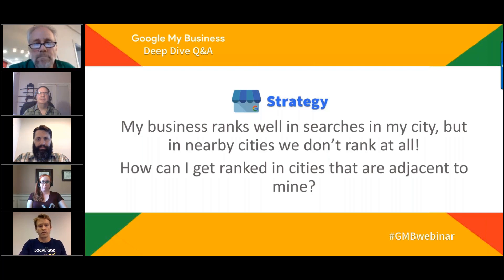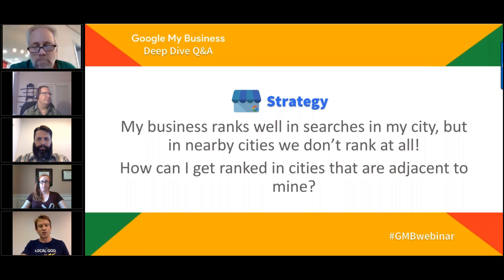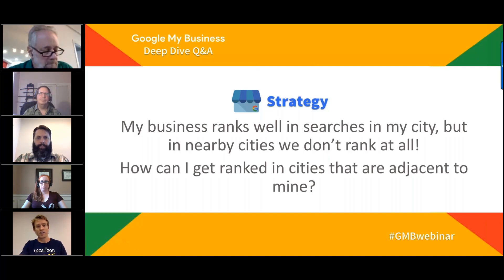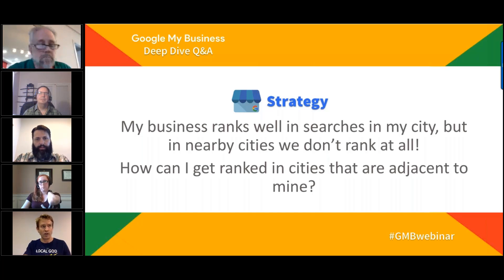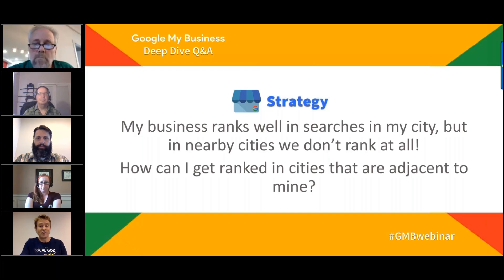Summarizing the adjacent-city ranking challenge: semantic techniques like writing content and posting with location references — on your own posts and Google Posts — can help link your business to locations. Beyond that, it comes down to paying in some capacity: AdWords or HSAs to target other locations, or opening genuine offices in the suburbs you want to serve. Essentially you're going to have to pay, either by advertising through Google or by establishing a real physical presence.